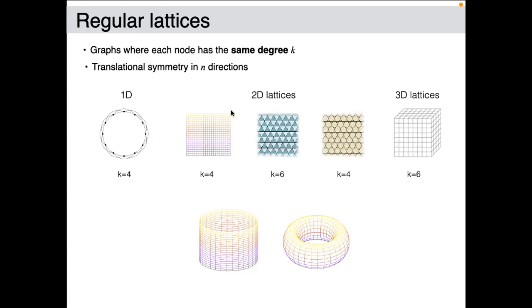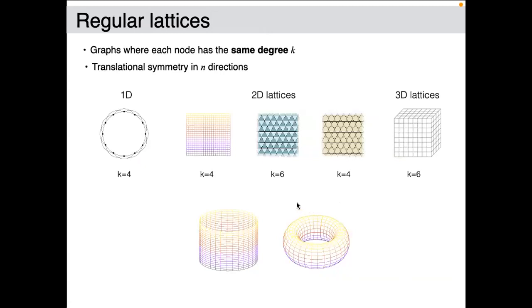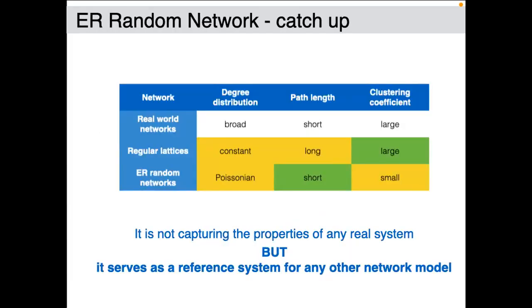In a regular lattice you can have a high clustering coefficient if you impose triangles, in one, two, or three dimensions. However, these networks have a long path length. If you add nodes to a circle, your average distance always increases — it will go to infinity as you add nodes. So you cannot have a short average distance in that case.